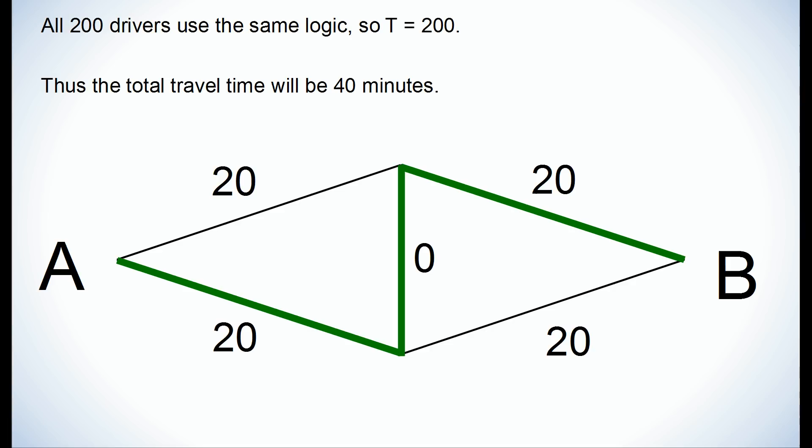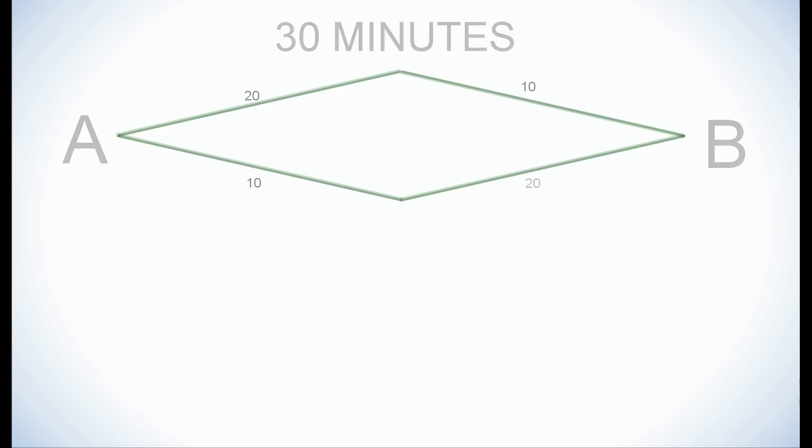Now let's compare the travel times before and after the new road. Before the new road, we calculated that it took 30 minutes to get from A to B as the drivers split up evenly between the two routes.